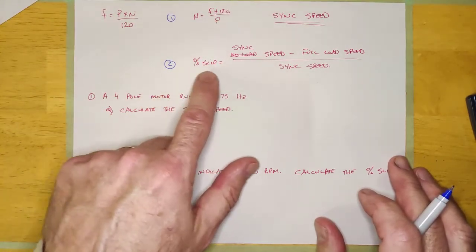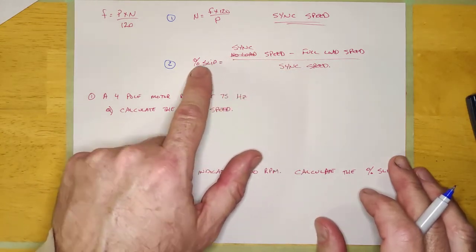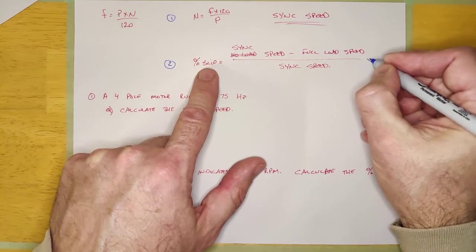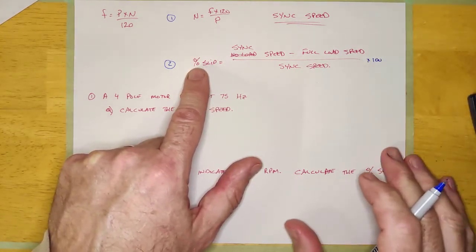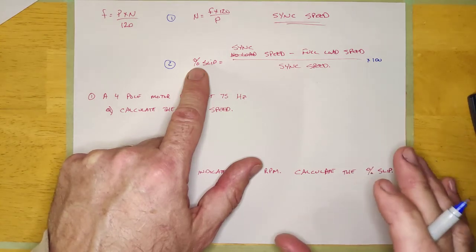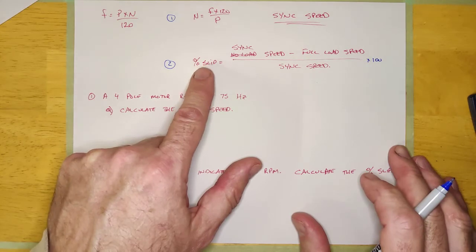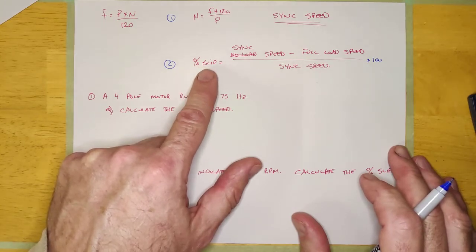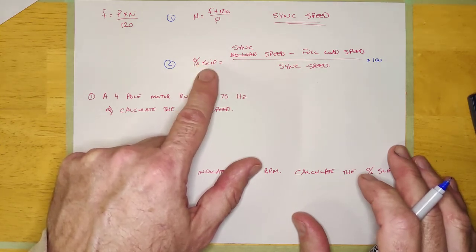The other formula that I want to talk about really quickly is calculating the percent slip. And what the percent slip really is, is how much is it slipping? How much is it slipping from no load to full load, essentially. So the lower the percent slip for a particular motor, the less it's slipping or the less of its sync speed it's slipping. And so the lower the percent slip, kind of the better the speed regulation of the motor.